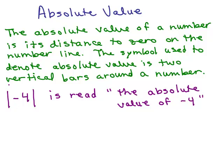So if I write this, see this two vertical bars around the number negative 4, we read this the absolute value of negative 4. And then this is what it means. You have a number line and let's say here's zero, one, two, three, four.